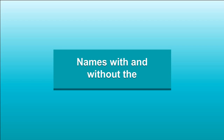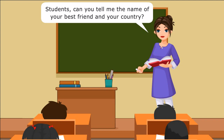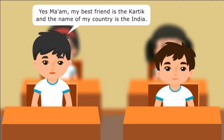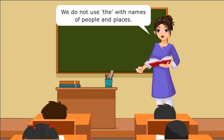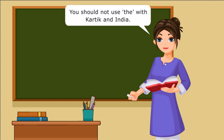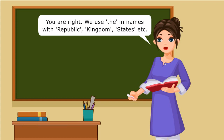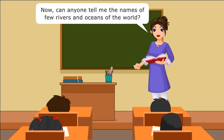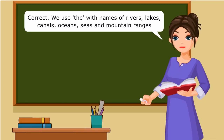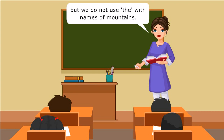Names with and without the. Can you tell me the name of your best friend and your country? My best friend is Karthik and the name of my country is India. We do not use 'the' with names of people and places. You should not use 'the' with Karthik and India. But ma'am, we use 'the' with the United States of America. You are right — we use 'the' in names with republic, kingdom, states, etc. Now can anyone tell me the names of a few rivers and oceans of the world? The Nile and the Thames. Correct — we use 'the' with names of rivers, lakes, canals, oceans, seas, and mountain ranges. But we do not use 'the' with names of mountains.